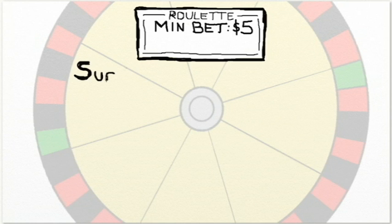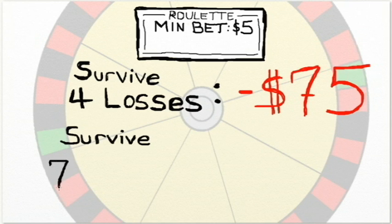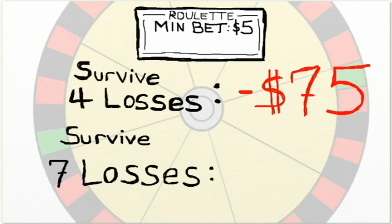Let's say you're able to find an inexpensive table that allows a minimum bet of $5. Well surviving a small string of losses won't be too difficult to cover, but it gets expensive fast. Losing 4 times in a row, this table will only require a starting bankroll of $75. But to survive 7 losses in a row, you'll need to start with $635.